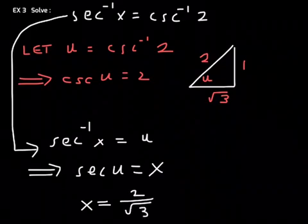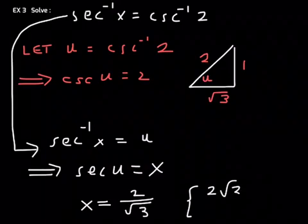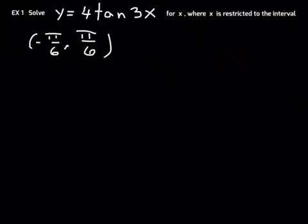So, then that implies that x is just secant of u, which is hypotenuse over adjacent. So, then x is, in set notation and rationalized, 2 root 3 over 3. Isn't that nice?